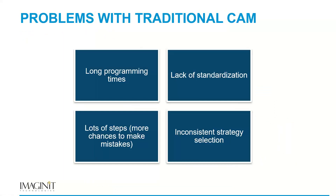The problems with traditional CAM: long programming times, lack of standardization — each machinist may do completely different things based on their training and experience — more steps which means more chances for mistakes, and inconsistent strategy selection. With FeatureCam, you can build a configuration that everyone uses so strategy and tool selection is consistent.